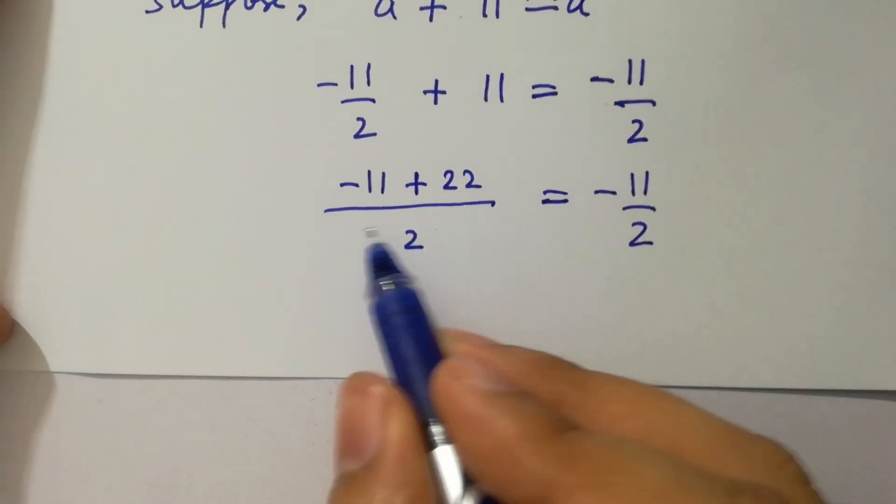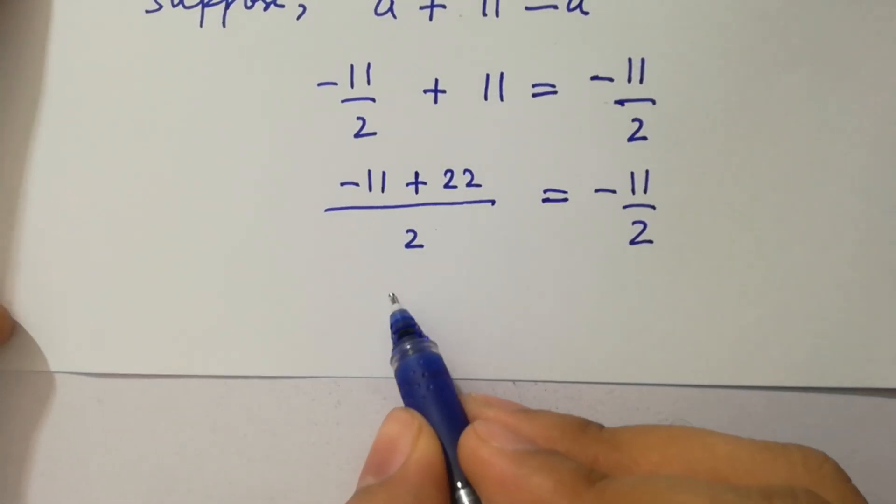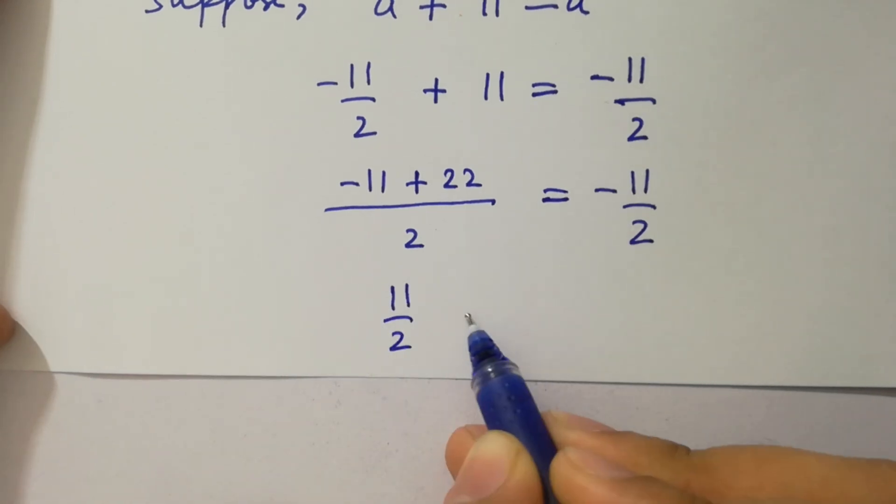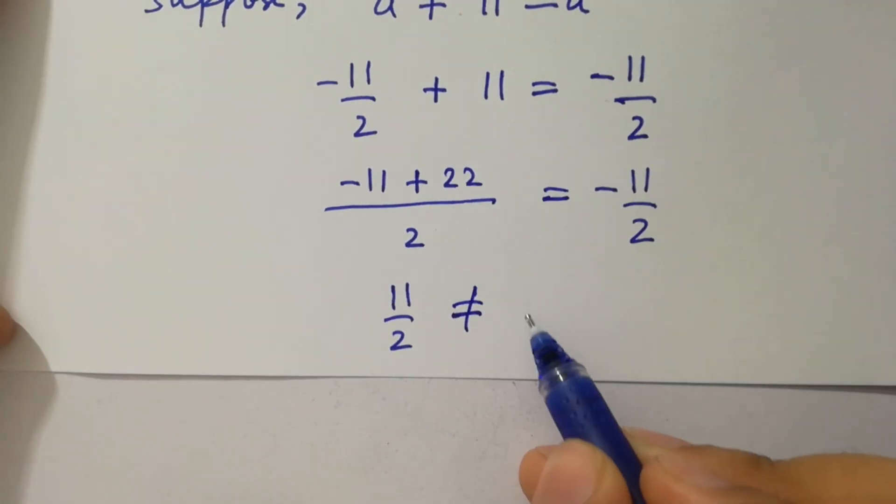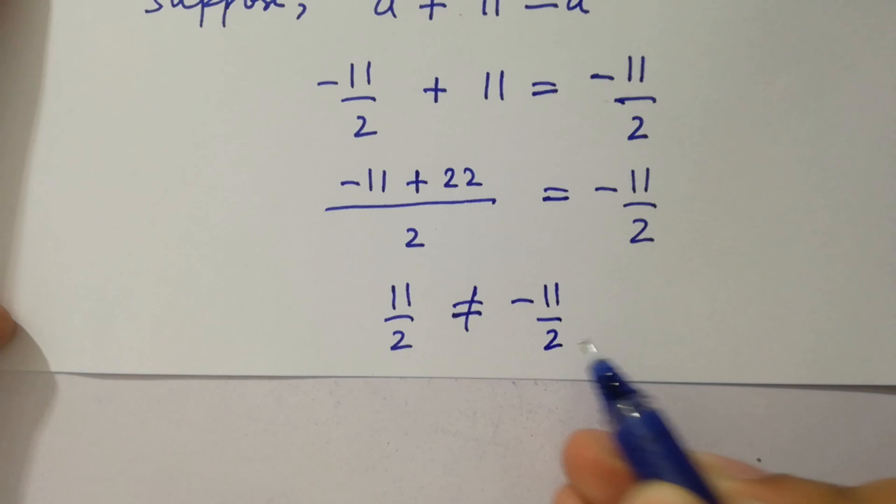Next, we have 22 minus 11 will be 11 over 2, which does not equal to minus 11 over 2. So, but why?